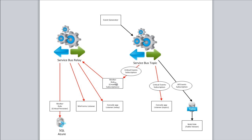We're using push notifications here — unlike the console application where we were polling, in this case we are not polling. The worker role code also publishes to the Service Bus using the multicast relay bindings. Critical events that come in are published up to the relay, and from there they get sent out to subscribers listening on those endpoints. There's a console application listening, a WinForms listener that displays critical events, and a critical persister that picks up critical messages transmitted through the relay and persists them into SQL Azure.